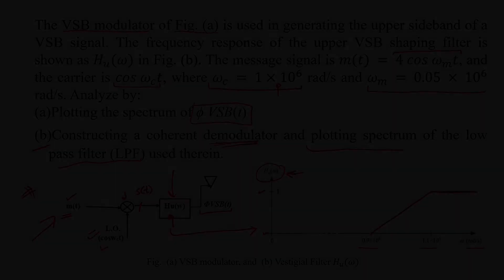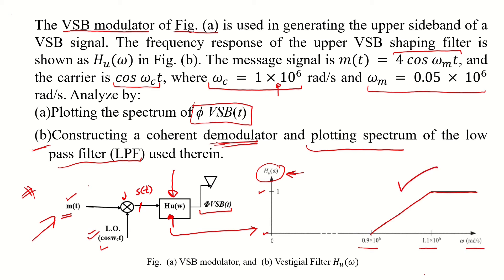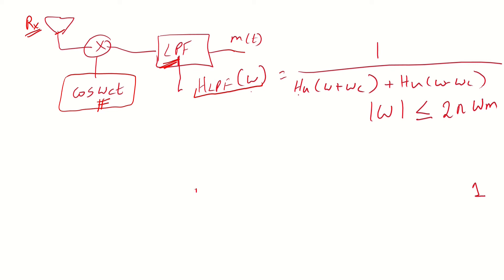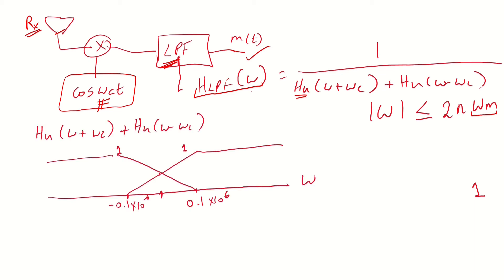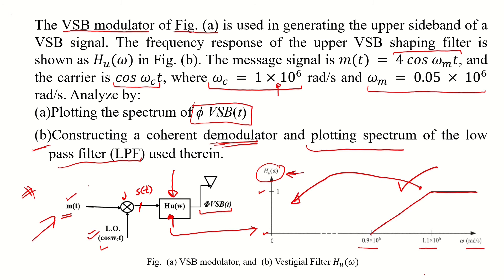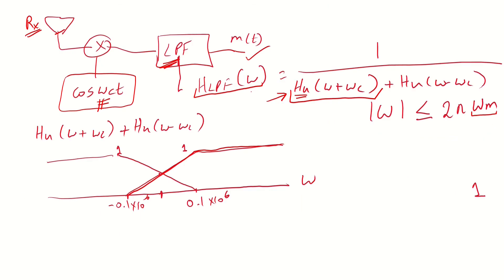We need to design the low-pass filter, which is linked to the vestigial sideband filter. The relationship is: H_LPF(ω) is proportional to 1 over [H_U(ω+ω_c) + H_U(ω−ω_c)], for |ω| ≤ 2π·ω_m. Looking at the denominator, we plot H_U(ω+ω_c) — the filter shifted left — and H_U(ω−ω_c) — the filter shifted right to the negative side.